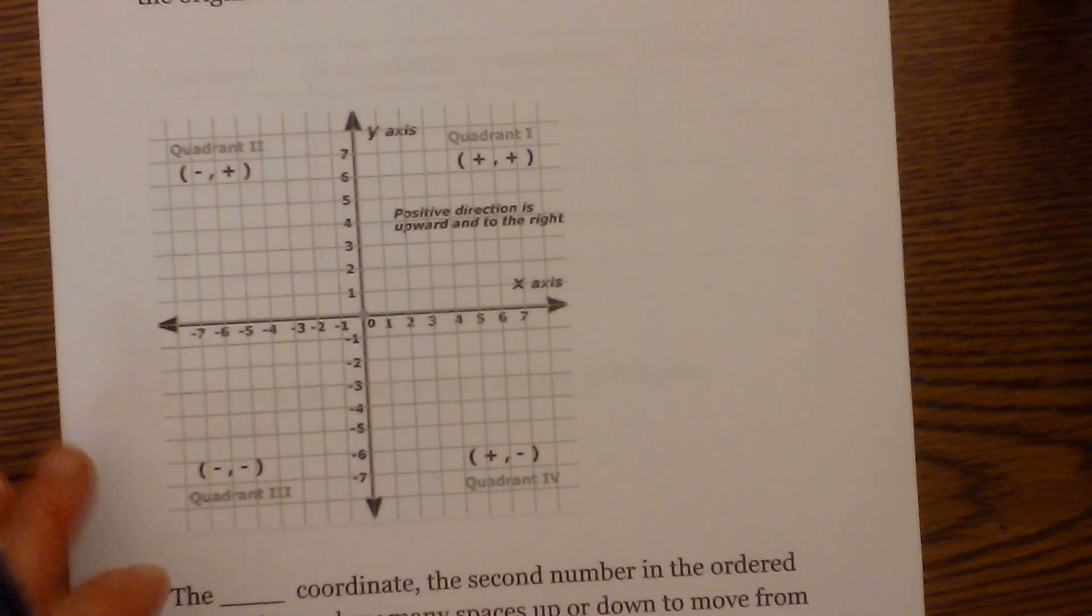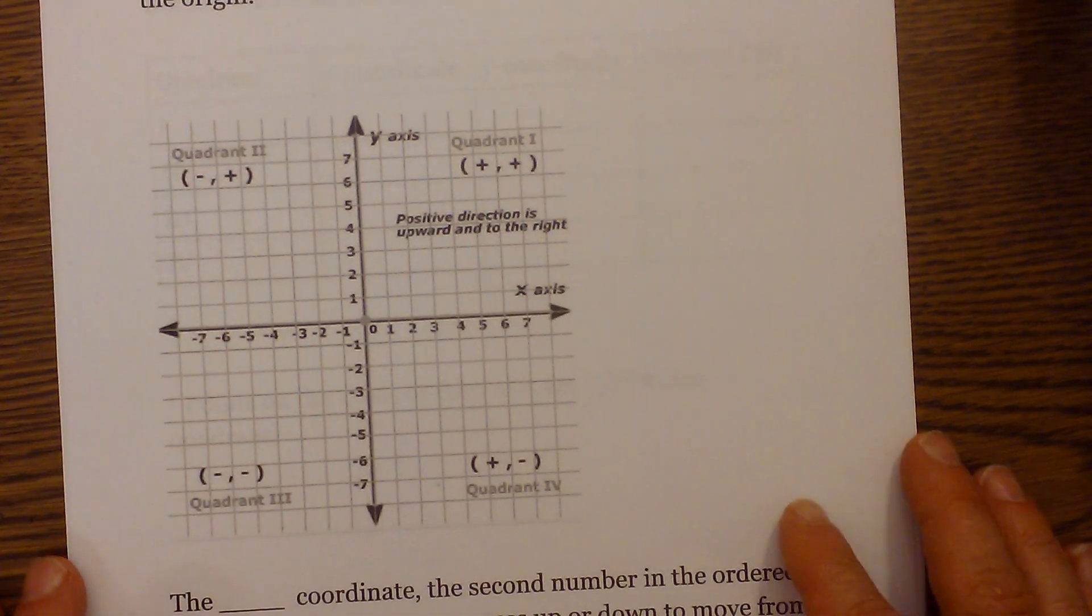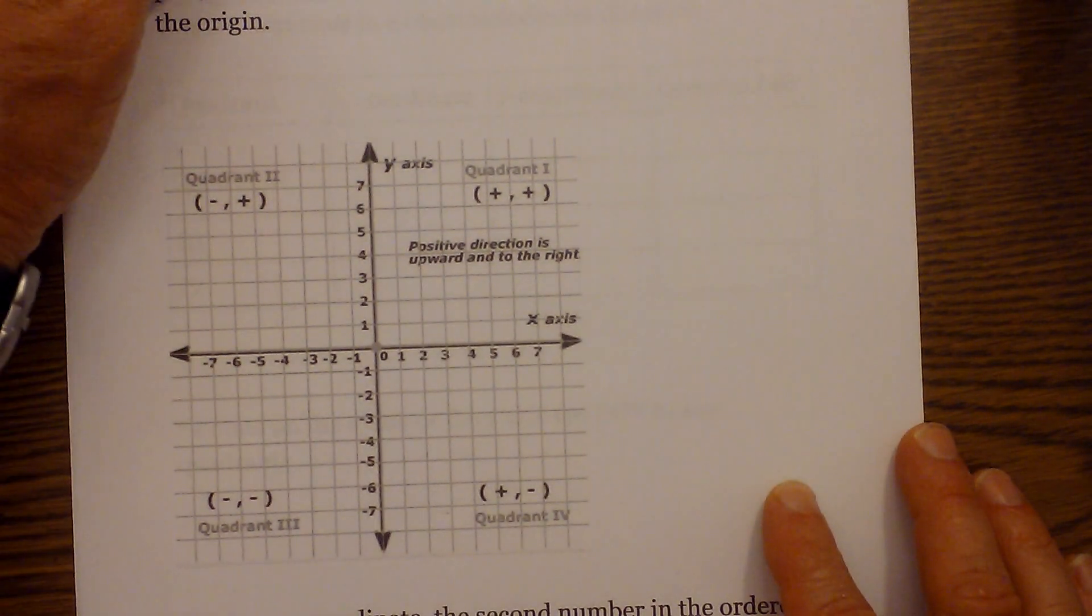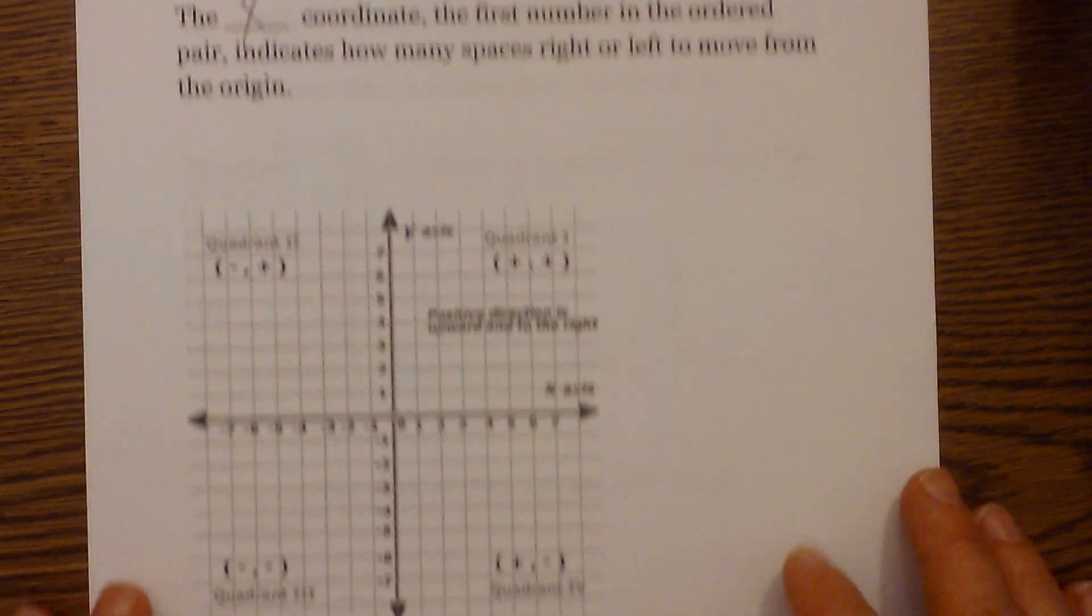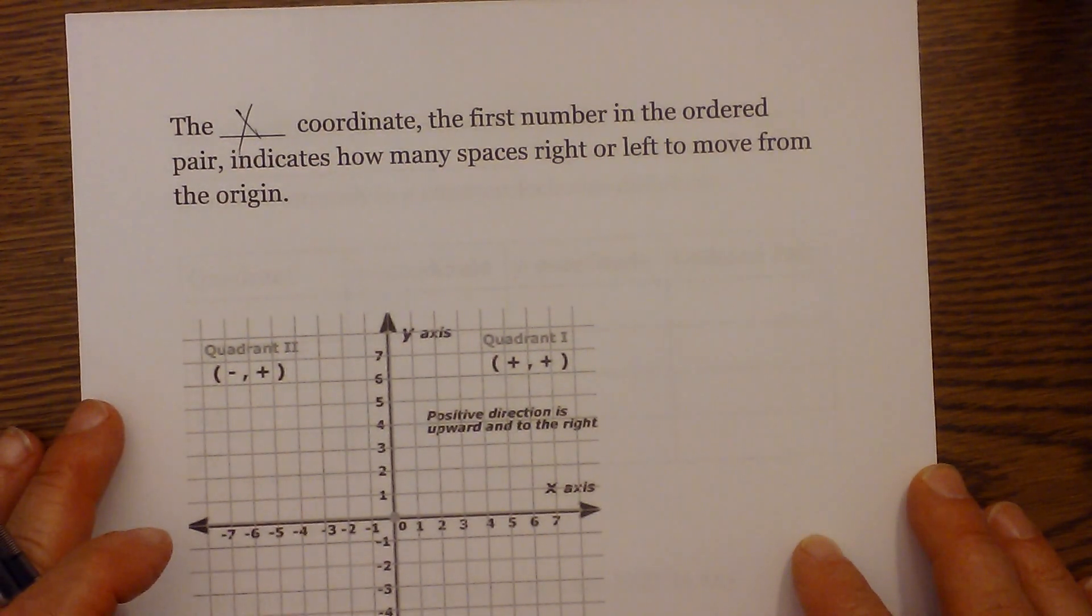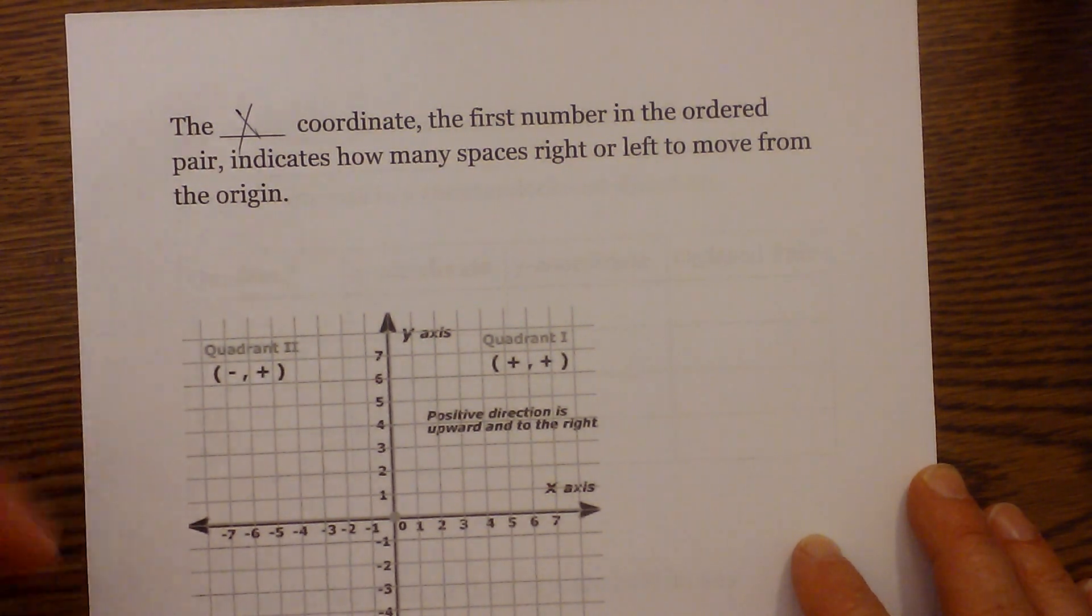Let's point out a couple other items. The x coordinate is always the first number in the ordered pair and indicates how many spaces to the left or right you move from the origin. So you're going to be moving left and right, and it's the first one.